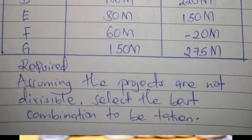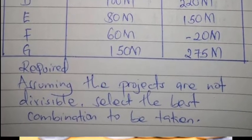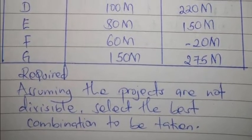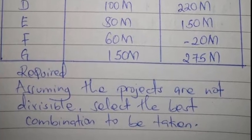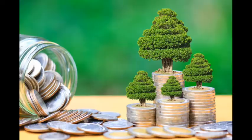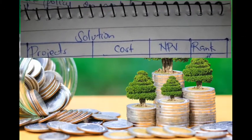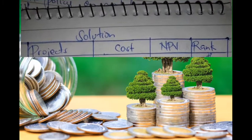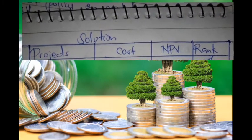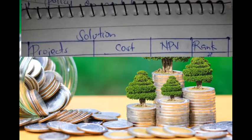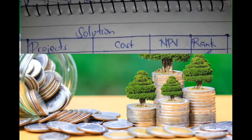The question requires us, assuming the projects are not divisible, to select the best combination to be taken. Since projects are not divisible, we use the NPV technique. We draw a table with columns for projects, cost, NPV, and rank, then start choosing combinations of projects that we think will meet the capital expenditure budget of 200 million.